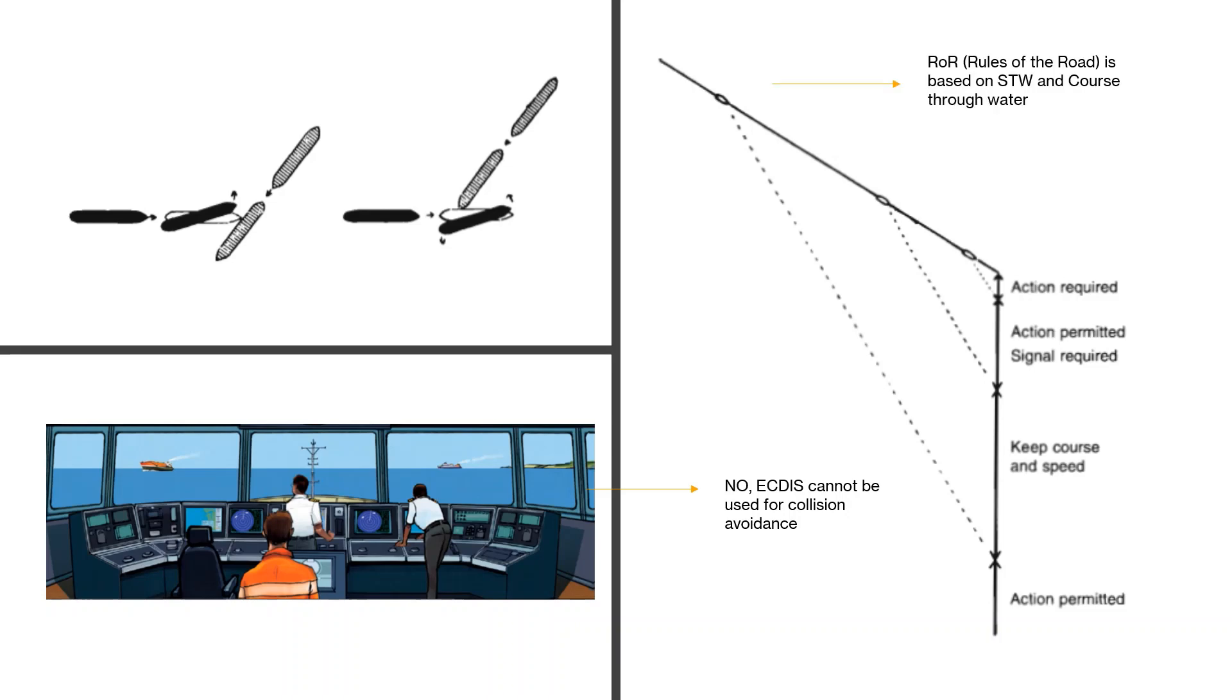That is because the Rules of the Road, or the ROR, is purely based on speed through water and course through water. It means that when you are assessing a situation, you are trying to determine the risk of collision. You actually take into account the speed through water and the course through water of your own vessel and the vessel with which you have a risk of collision.